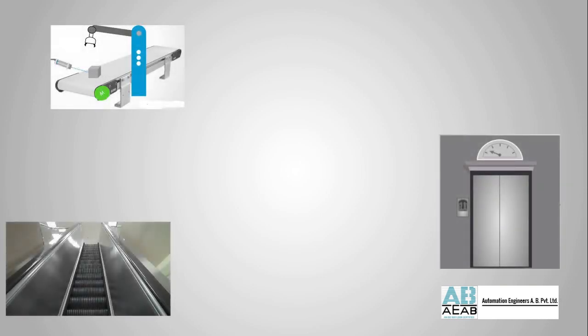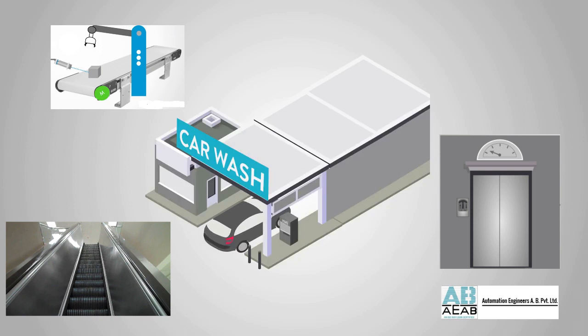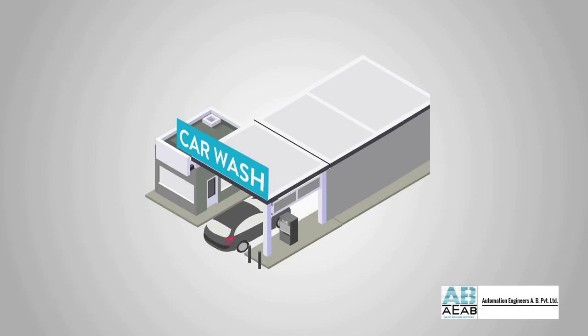Some simple everyday examples of automation are lifts, conveyors, escalators, automatic car wash, etc. Let's elaborate on the car wash step by step — it should help you understand how automation works.